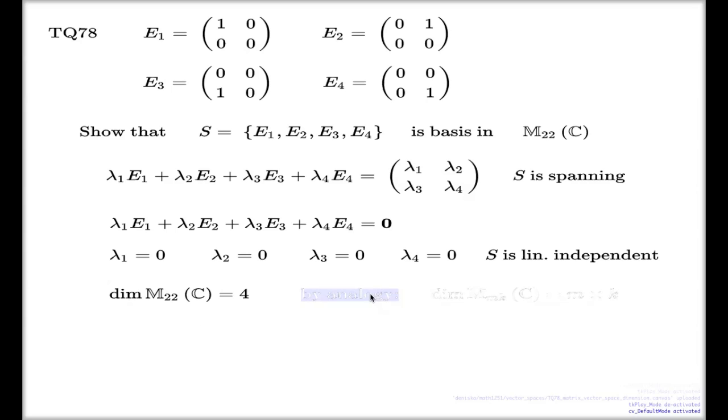By analogy, you can establish that the dimension of the space of matrices of size m×k, so m rows, k columns, with complex entries, is simply m×k.